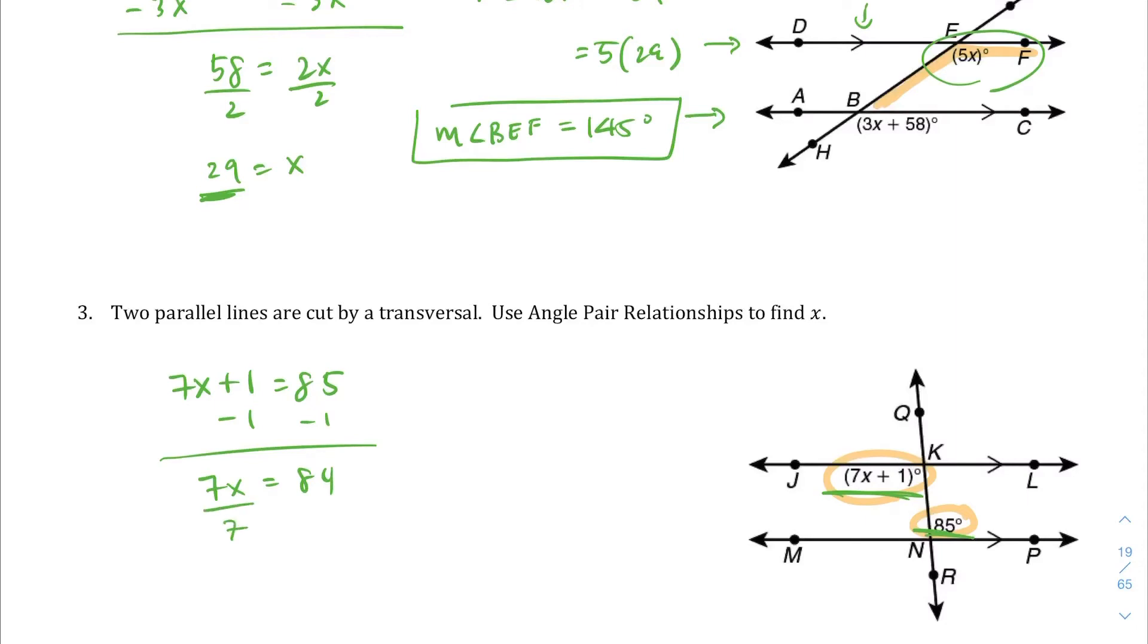Let's subtract 1 from both sides. We end up with 7x equals 84. Divide by 7, the division property of equality, we get 12, x equals 12. And in this case they just want us to find x so we're done. That was the last question for this section.